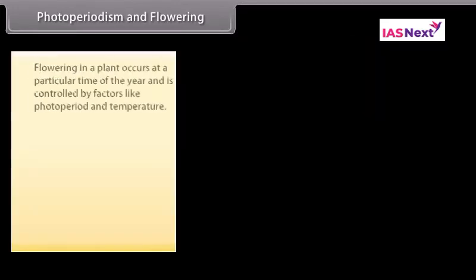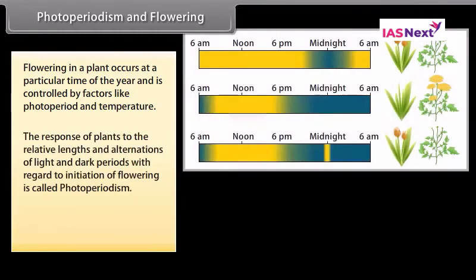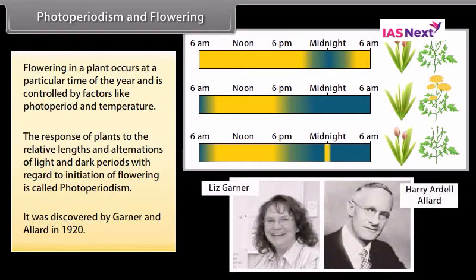Photoperiodism and flowering: Flowering in a plant occurs at a particular time of the year and is controlled by factors like photoperiod and temperature. The response of plants to the relative lengths and alternations of light and dark periods with regard to initiation of flowering is called photoperiodism. It was discovered by Garner and Allard in 1920.